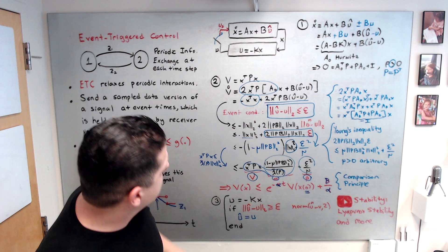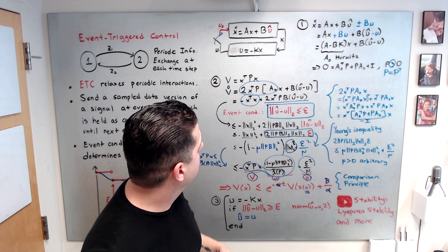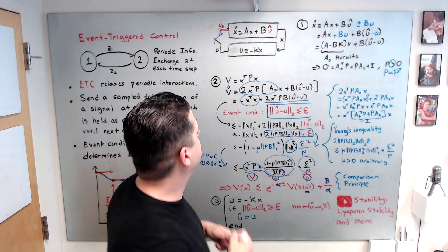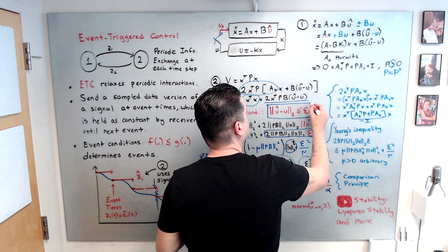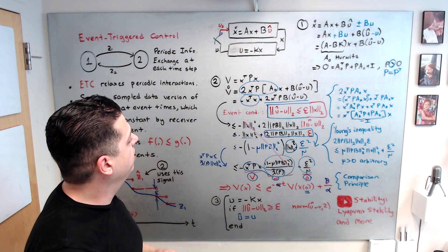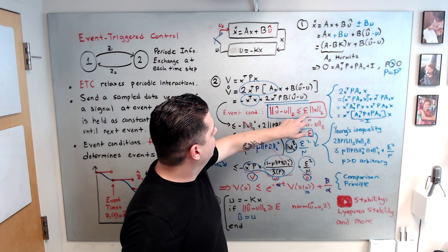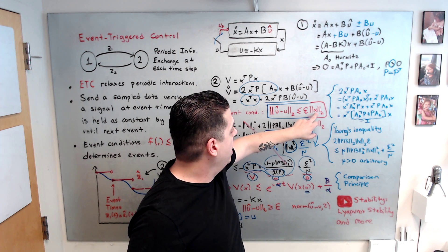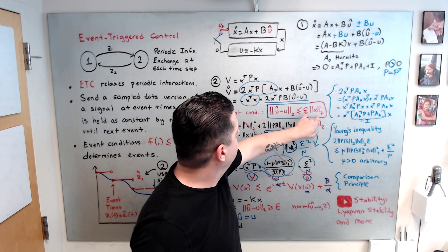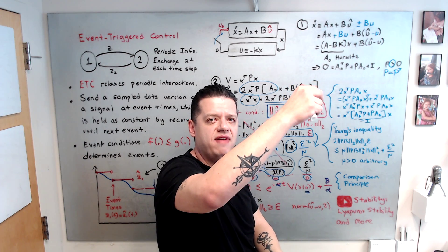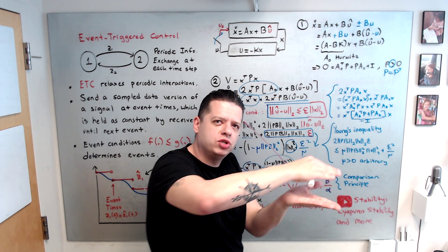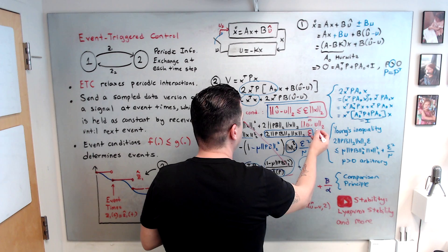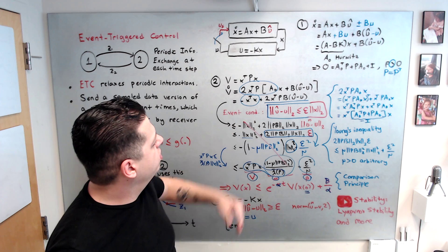If you want a numerical example or have questions, leave comments. Before concluding: you can also use a state-dependent event rule instead of a static constant ε. In that case, the stability analysis changes and must be redone. With a state-dependent rule, event times depend on system behavior. When x is far from equilibrium (zero), the threshold is larger so fewer events occur. When x approaches zero, more events occur for more precise performance — a natural trade-off.